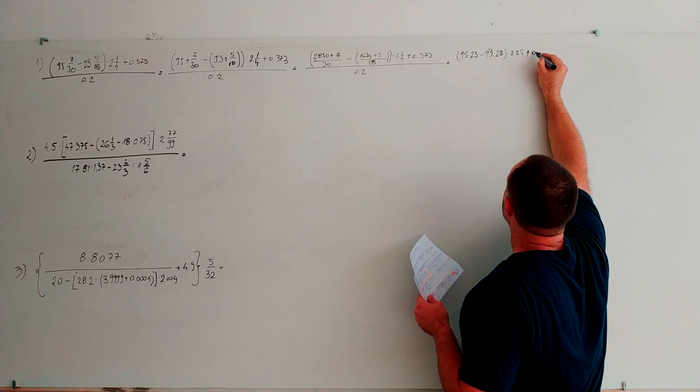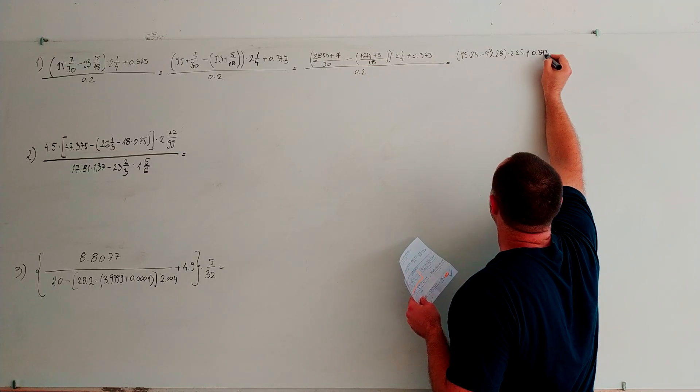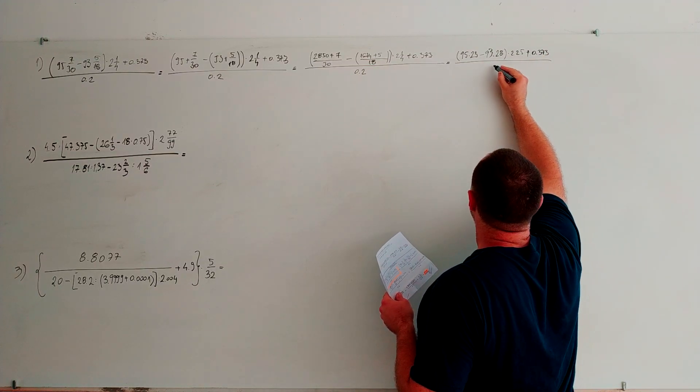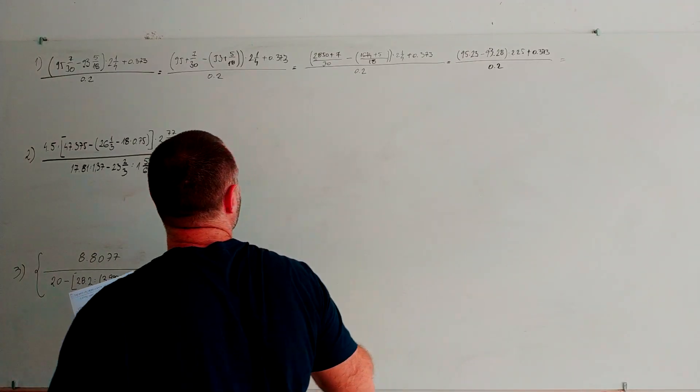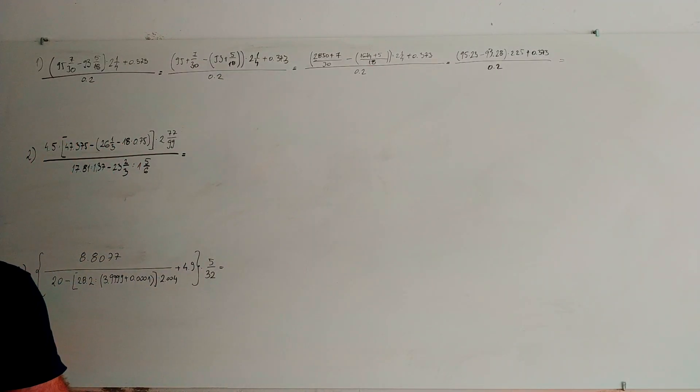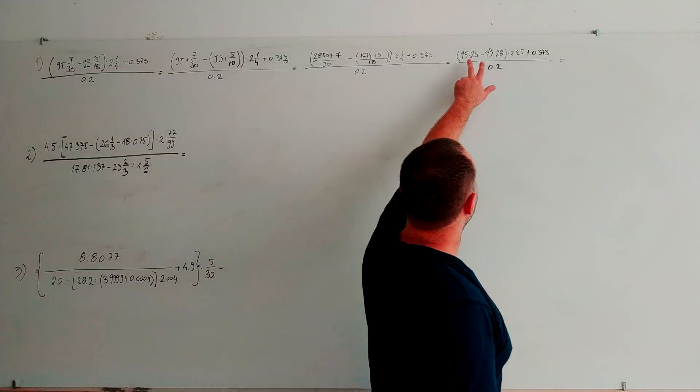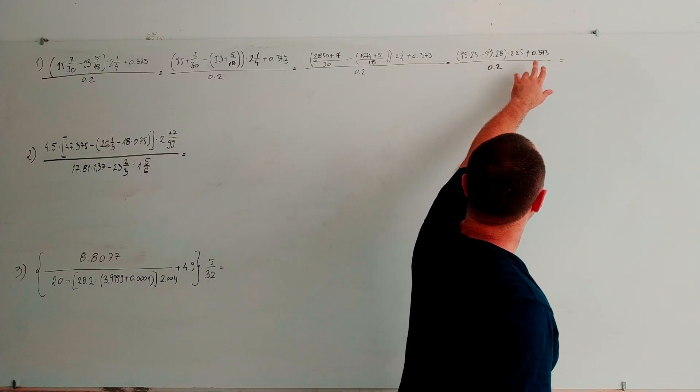2 and a quarter is 2.25 plus 0.373. We simplify this bracket, multiply by 2.25 and so on.